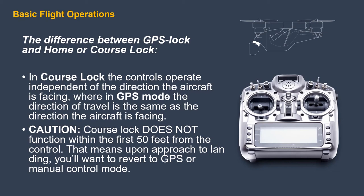On many drones, there's a switch to select between GPS lock or course lock. In course lock, the controls operate independent of the direction of the aircraft, while in GPS mode, the direction of travel is directly related to the direction the aircraft is facing. Newer drones come with that feature as the default to prevent problems related to loss of situational awareness. However, course lock does not function within 50 feet of the control point, so upon approach to landing, you'll want to revert to GPS or manual control mode.